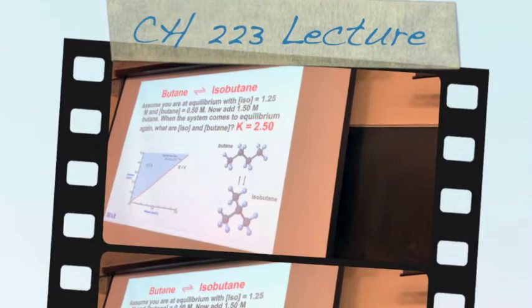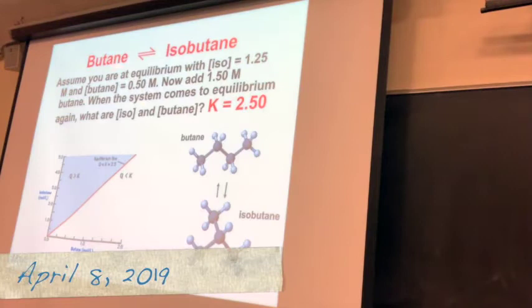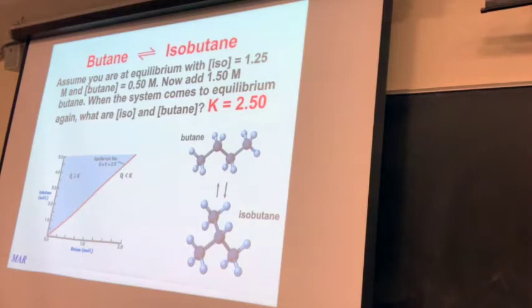Good morning. I hope you had a good weekend. We're going to continue talking about what happens when you disturb an equilibrium. At the end of Friday we left off talking about a butane to iso-butane equilibrium with a K of 2.50. Remember, as long as K is greater than one, that means you have more product than you have reactant.